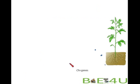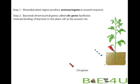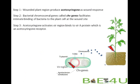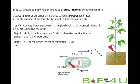Now let us look at the stepwise process of infection. A wound occurs in a plant, and the wounded plant region produces a chemical called acetosyringone as a wound response. Chromosomal virulence genes, or CHV genes, on the bacterial chromosome facilitate binding of the bacteria to the wound site. Acetosyringone then activates the vir region by binding to virA protein, which is an acetosyringone receptor. VirA phosphorylates virG, another vir operon protein, which dimerizes and activates expression of all vir operons. All vir genes together mediate successful T-DNA transfer and integration into the plant genome.